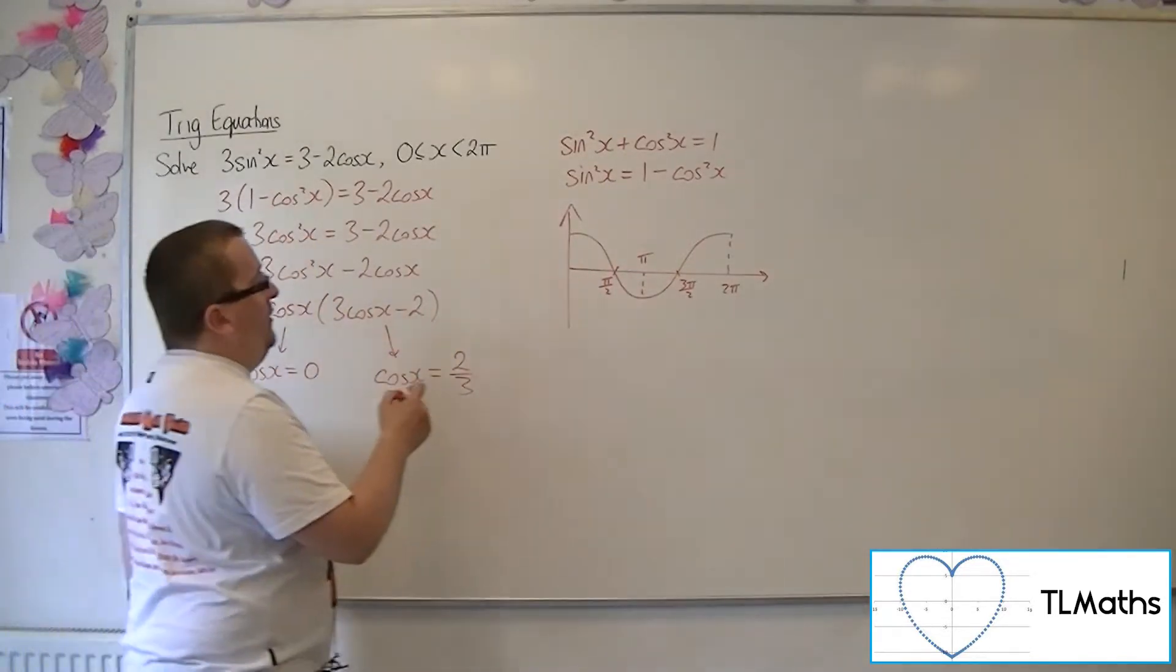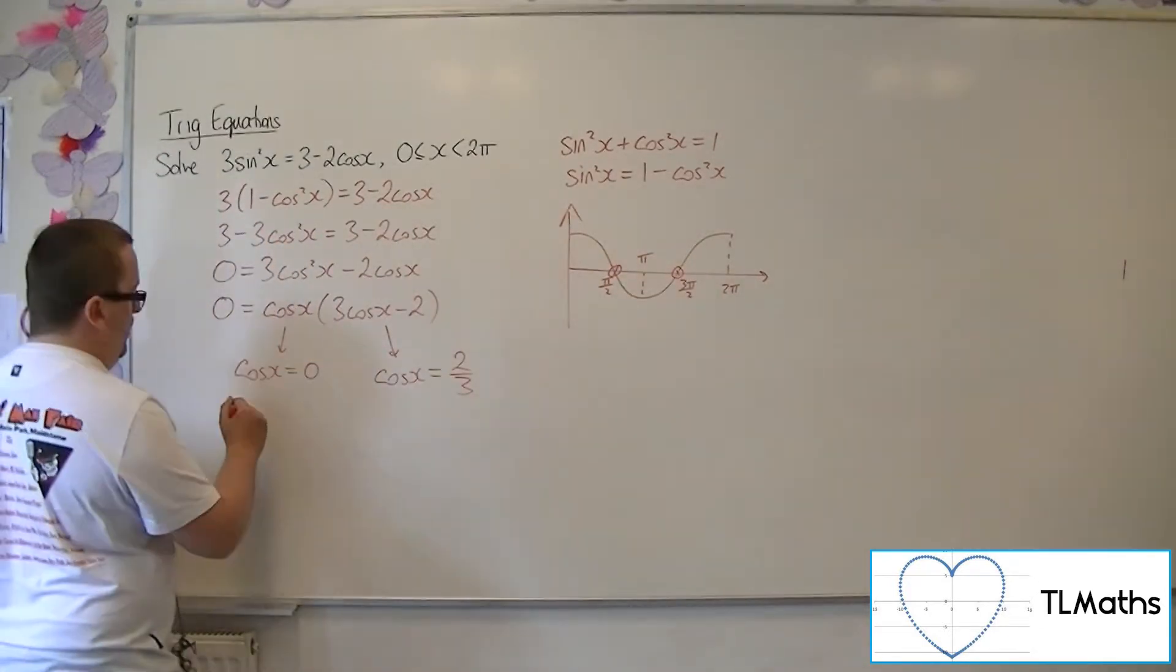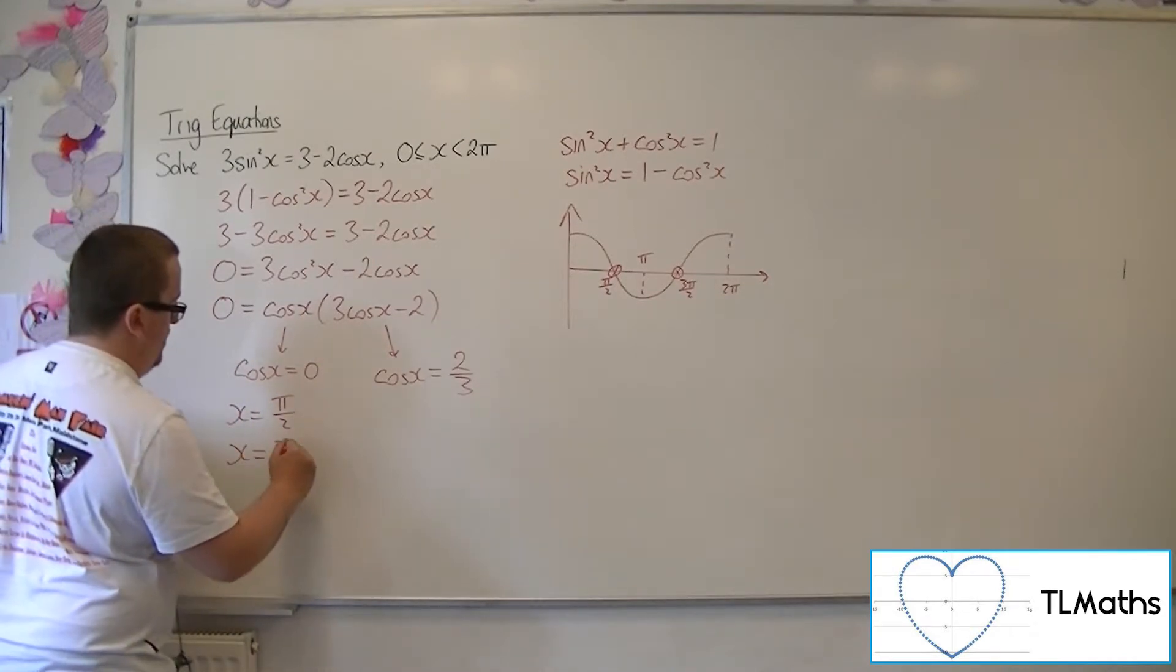Now, cosine x equals 0 will pick up those two solutions where the curve crosses the x-axis. So x is pi over 2, or x is 3 pi over 2.